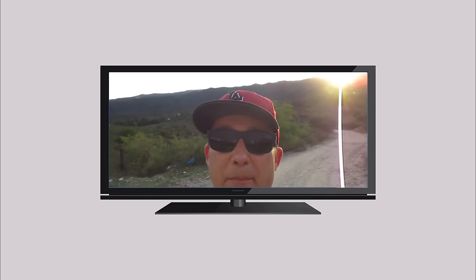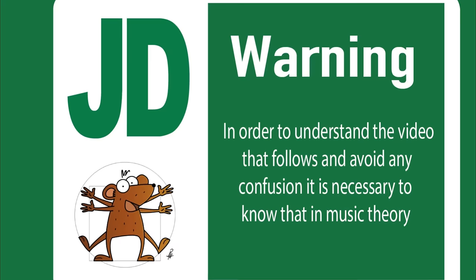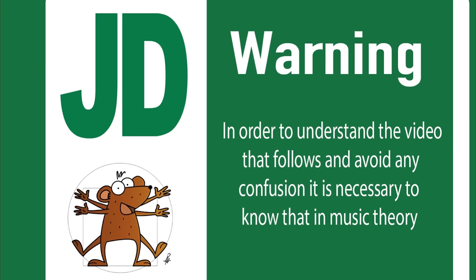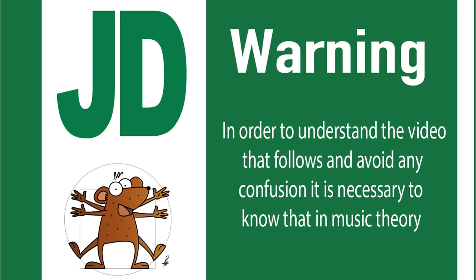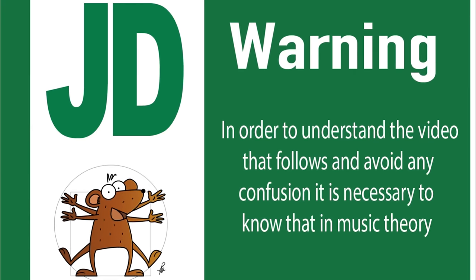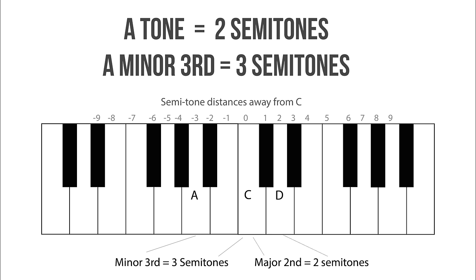Hi guys. I was given this hack 35 years ago by my big band teacher. I want to pass it on now because it's so cool. Warning! In order to understand the video that follows and avoid any confusion, it is necessary to know that in music theory, one tone equals two semitones and a minor third is the same as three semitones.